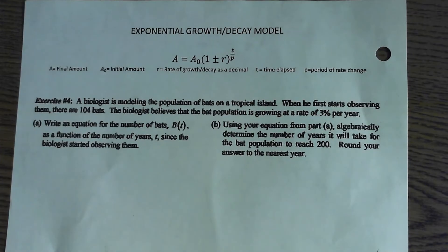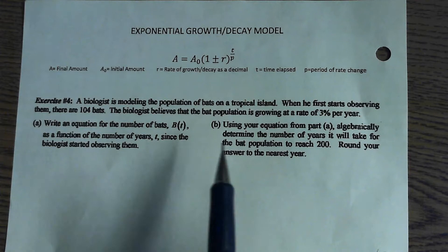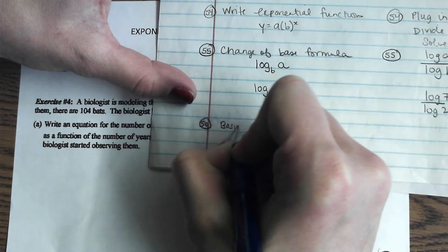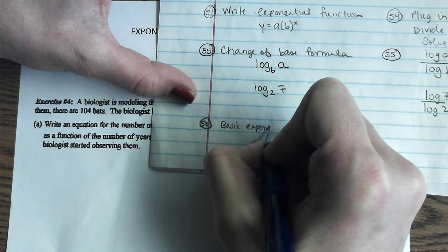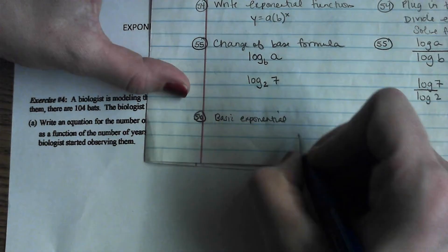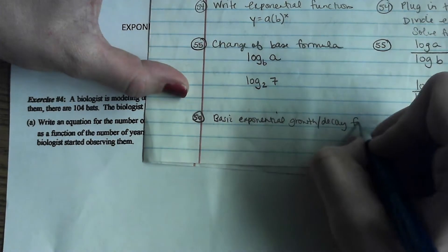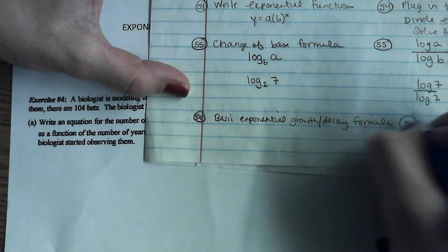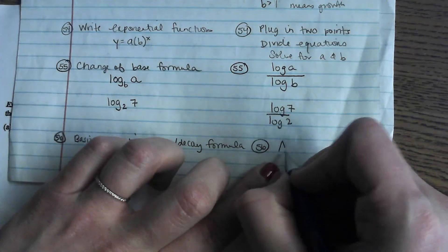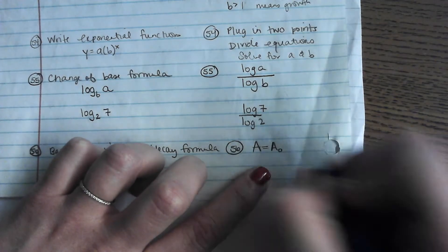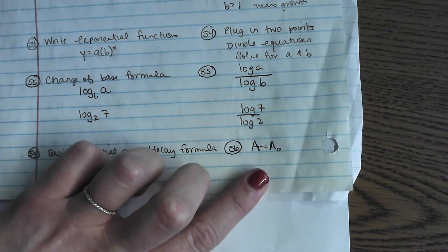Alright. This chapter gets real heavy on word problems. We're going to start with a general formula which you unfortunately have to memorize. So, this exponential growth decay model I'm going to write basic exponential growth decay formula. This is a formula you have to memorize if you don't memorize it you really have no chance. So, A is going to stand for the final amount. A sub zero stands for the initial amount. So, something like populations will do this with a lot. You have a starting population and your final population.